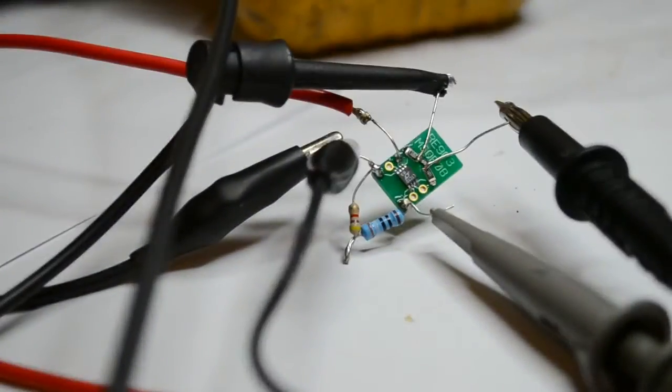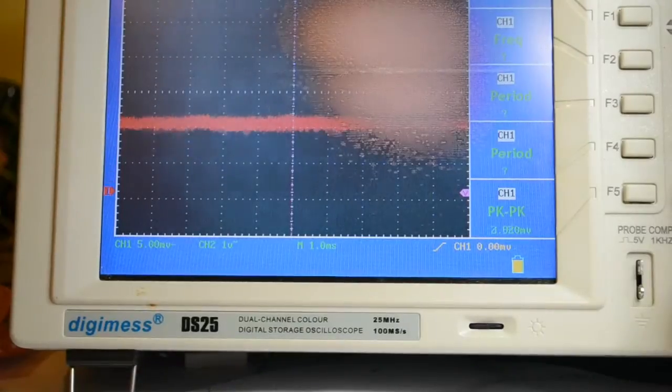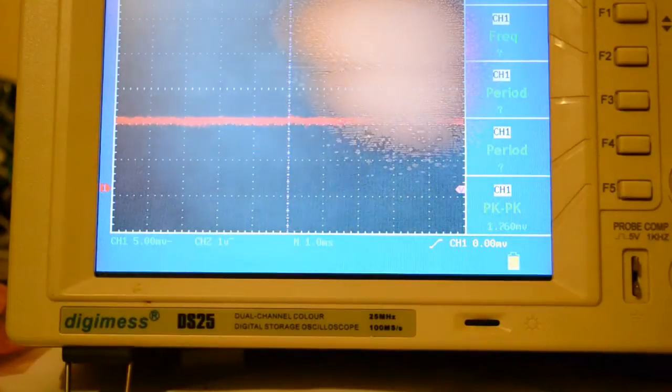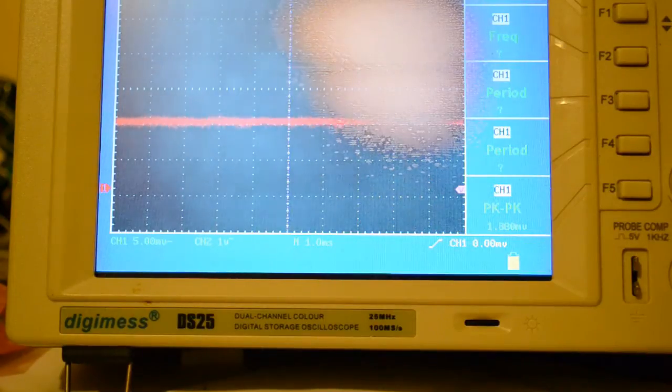I've got no decoupling caps, as you probably saw, nothing on the board at all. So you'd expect a bit of noise, and that scope is set to five millivolts per division. So I'm happy with it.